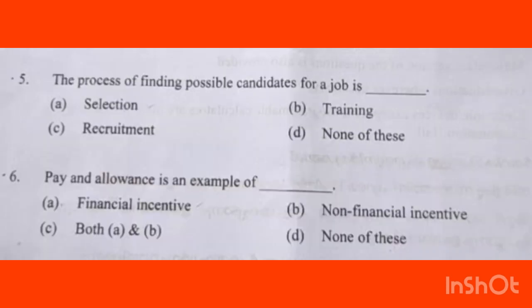The process of finding possible candidates for a job — if you have candidates to find through a search process, it is called: selection, training, recruitment, or none of these. We are learning this in the staffing chapter. Recruitment is the process of stimulating employees and searching for prospective candidates to apply for jobs in the organization. Option C, Recruitment, is the right answer.